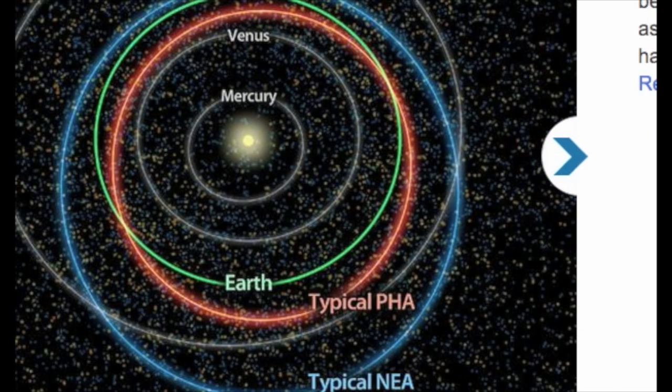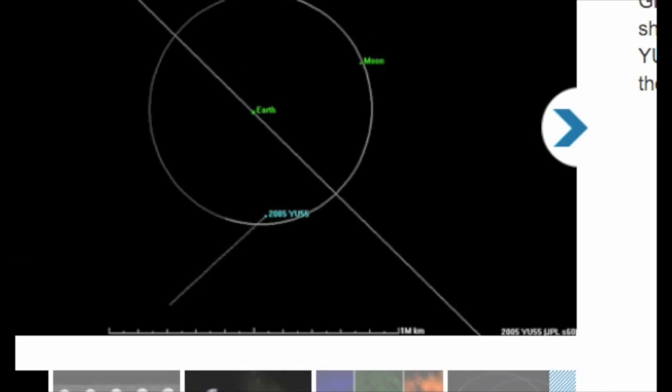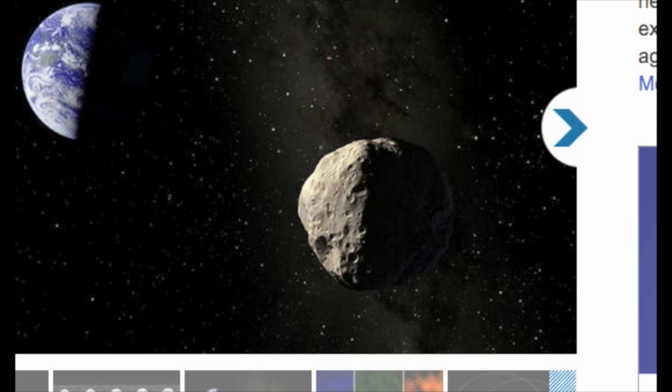Asteroid 2004 BL86 is nearly 1,800 feet in diameter, but there is no risk of it hitting the Earth when it zips by. The next asteroid of similar size to come near Earth will be the asteroid 1999 AN10, which will make its closest approach in 2027, according to the NASA statement.